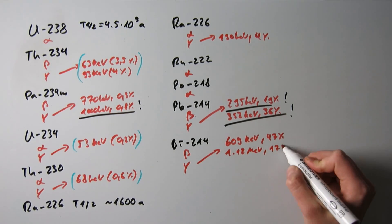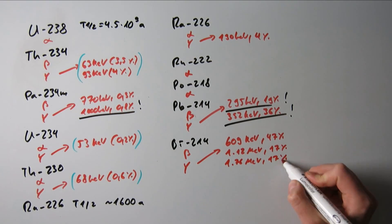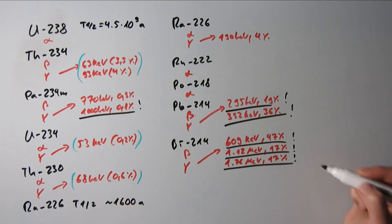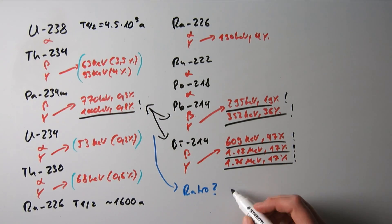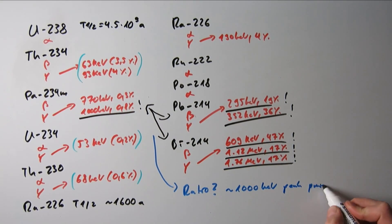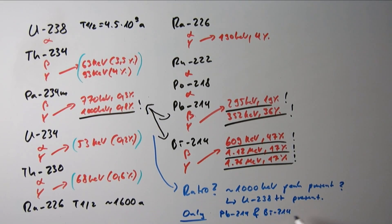But of course, if those are present, uranium could still also be present on the very top of the decay chain, so we have to look at the ratio from this 1000 keV peak from protactinium versus the bismuth and lead peaks. So if the 1000 keV peak is not present, then only everything from radium on is present, otherwise uranium is also contained.